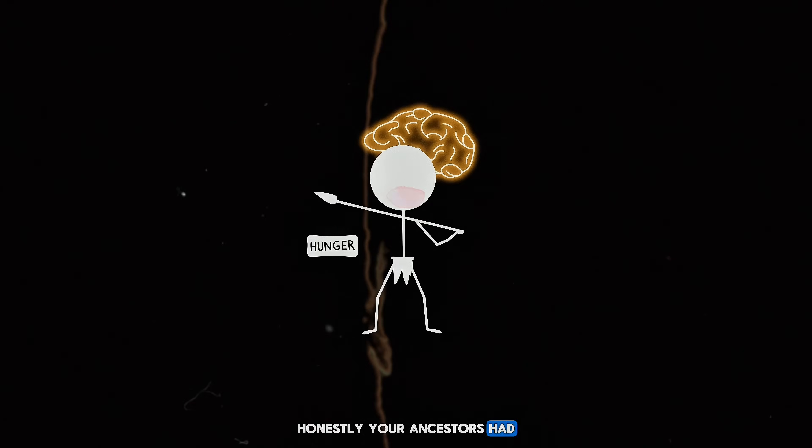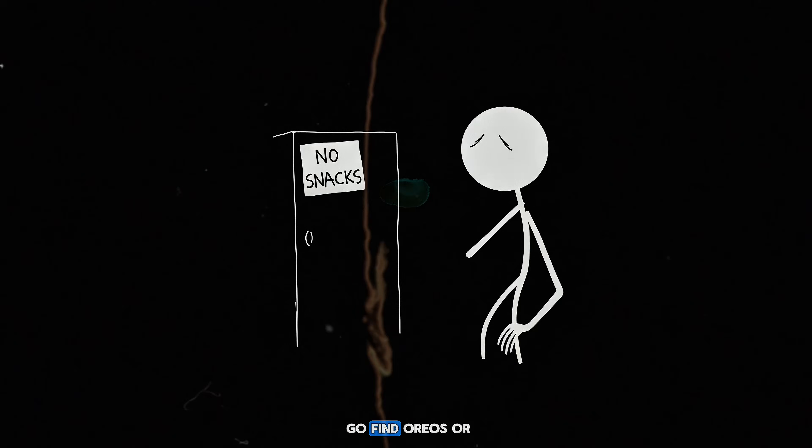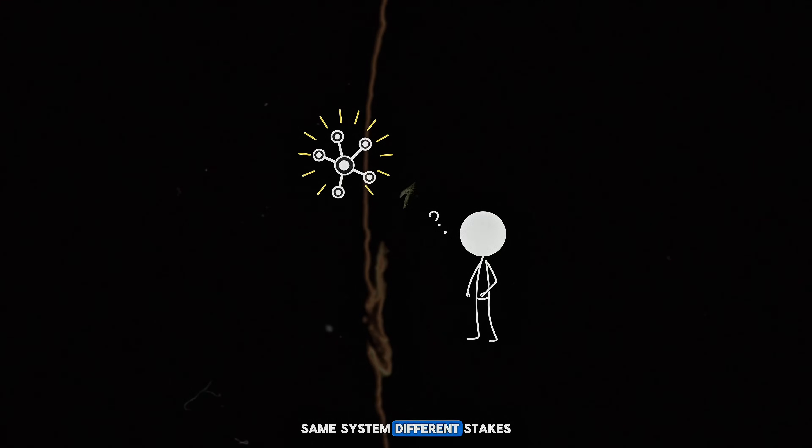Your ancestors had dopamine too. It told them, go find food or you'll die. Now it tells you, go find Oreos or you'll be slightly inconvenienced. Same system. Different stakes.